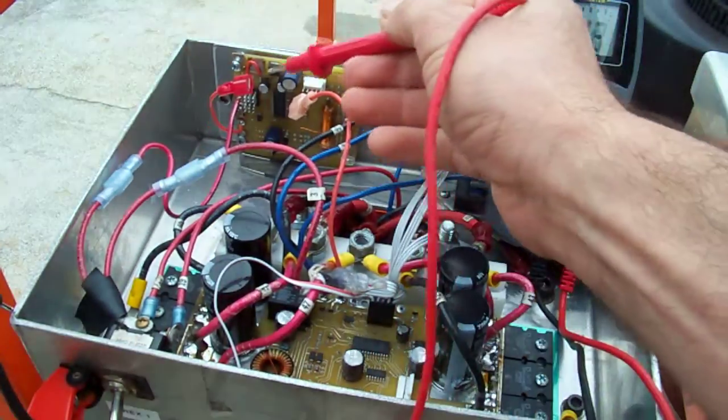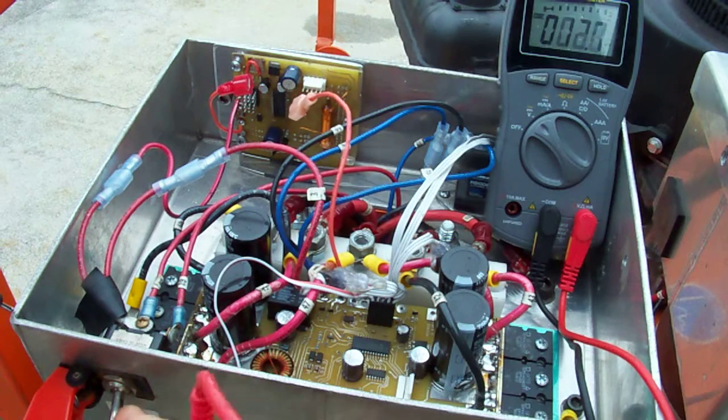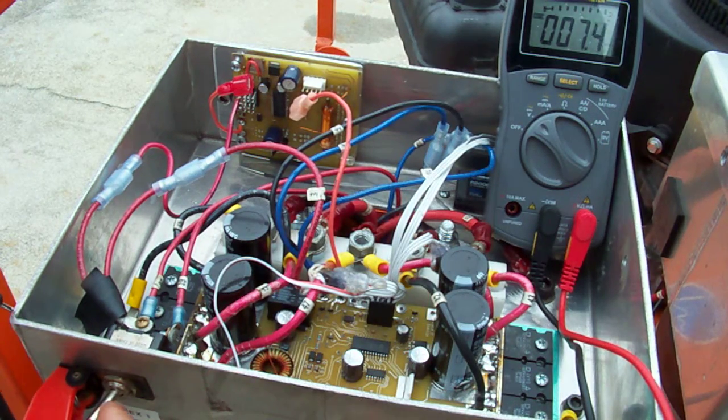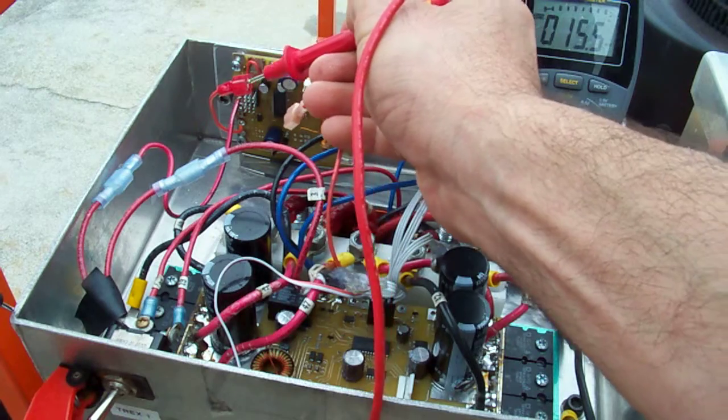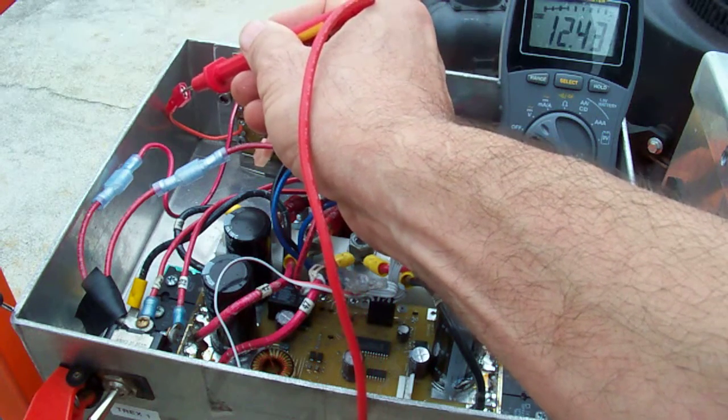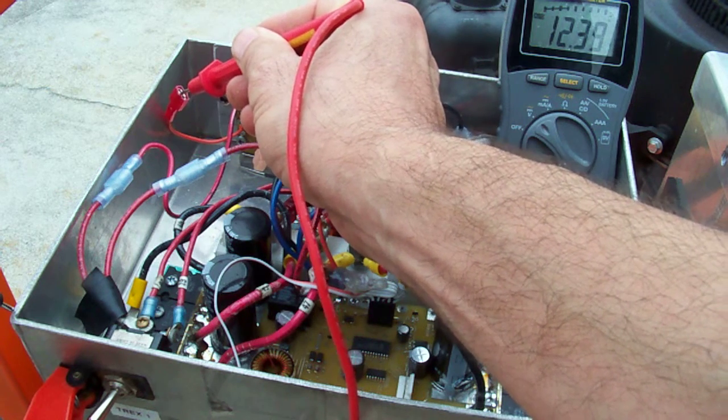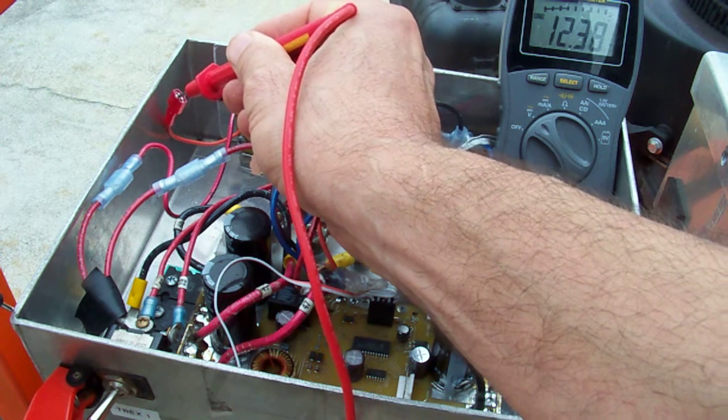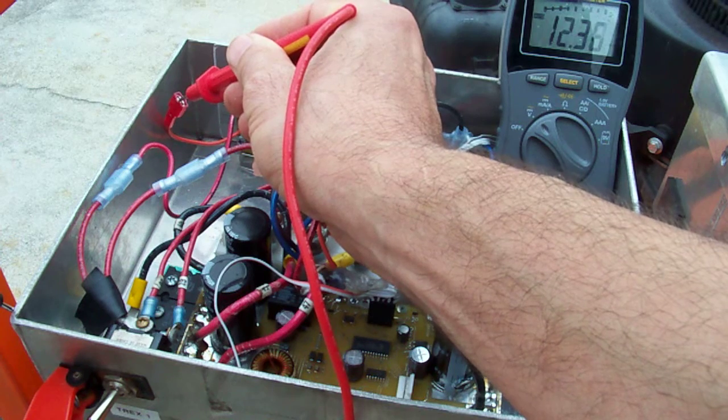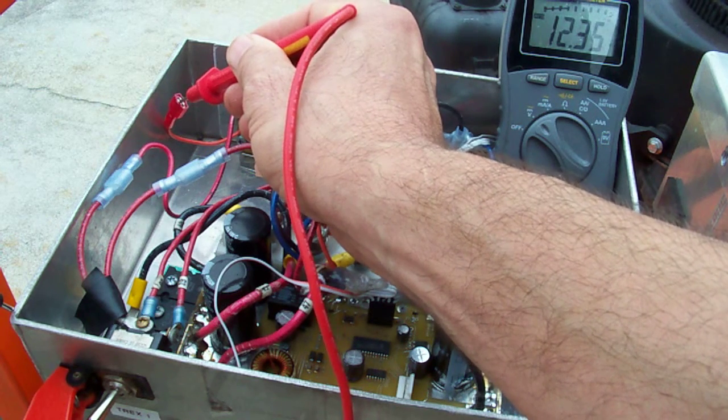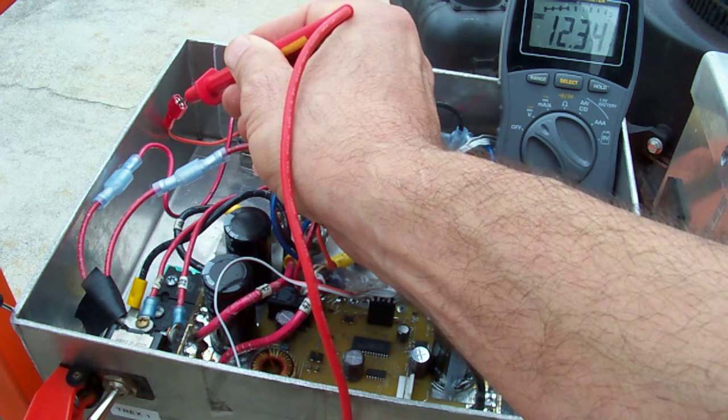Turn on the unit and you're expecting to see 14 volts. Anything less than 14 volts means there is something wrong with the DC to DC booster. As you can see right now, this is a defective DC to DC booster because it's showing about 12.3 volts.